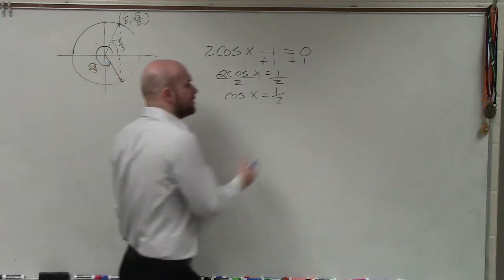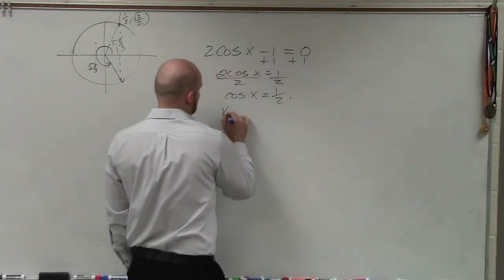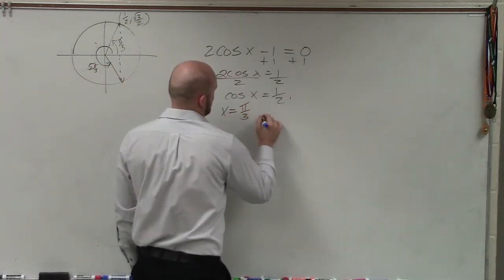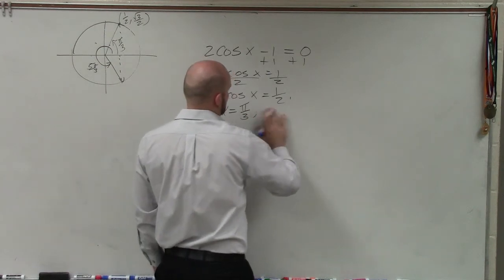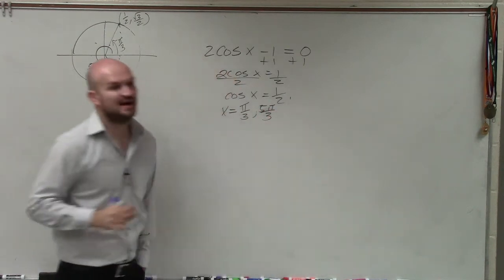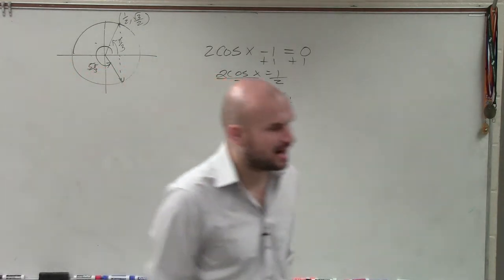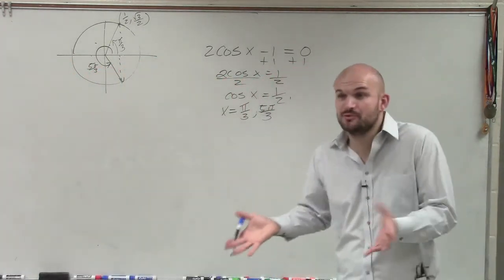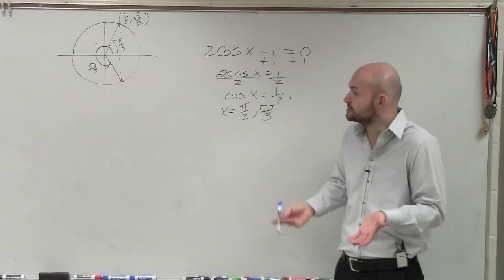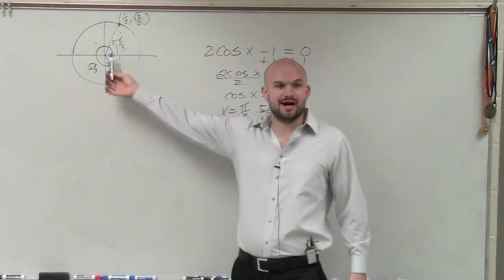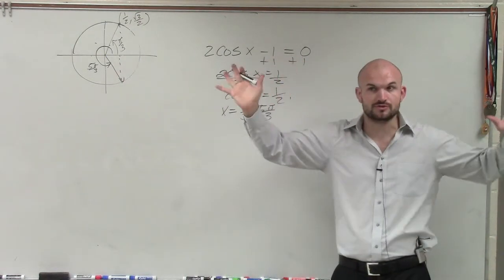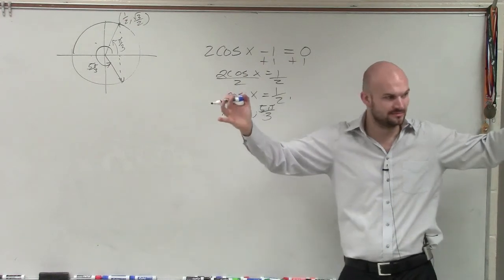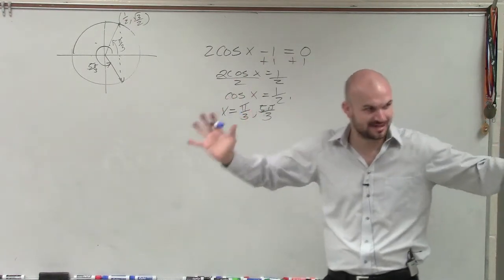So if I asked you to find all the solutions between 0 and 2 pi, that means all the solutions that are between pretty much in one revolution of the unit circle, you guys would agree that pi over 3 and 5 pi over 3 are those two solutions. Can I get at least some nods? Yes. Okay, so everybody understands that.